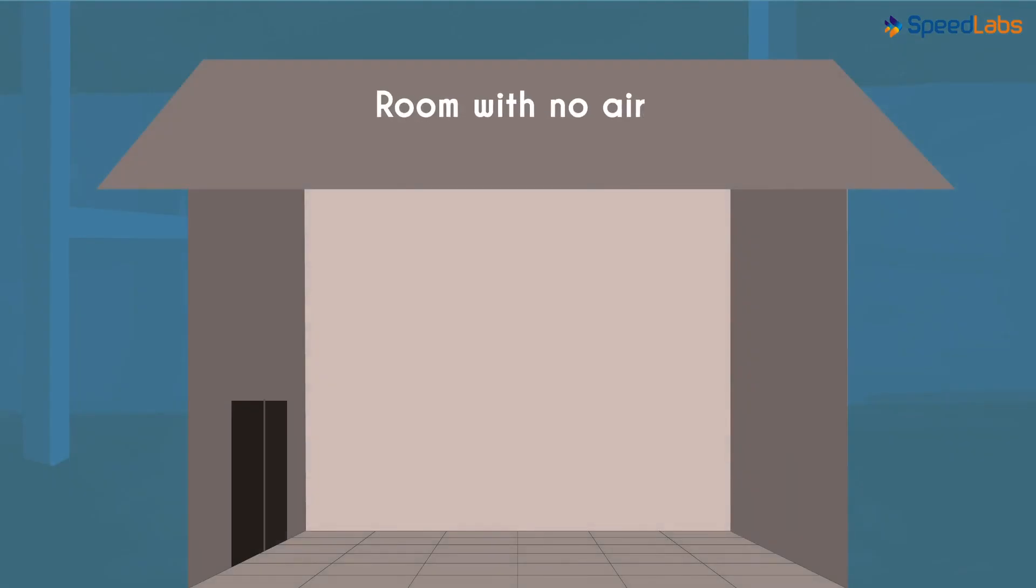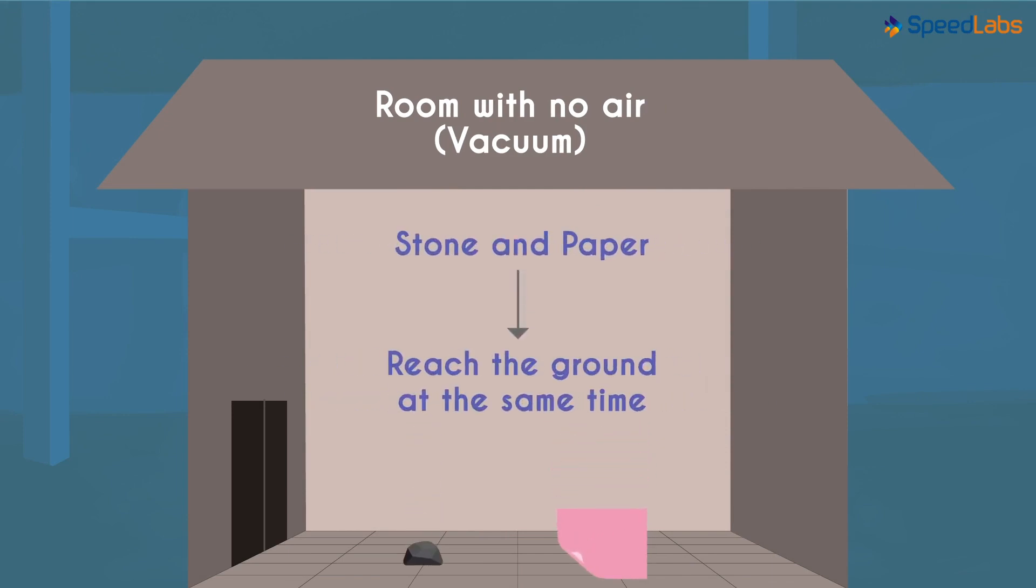For a moment, let's imagine a room with no air. It's vacuum. Now from the ceiling of the room, if a stone and a paper are dropped, will they fall to the ground at the same time? The answer is yes. They will reach the ground at the same time because there is no air to offer resistance.